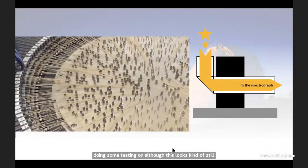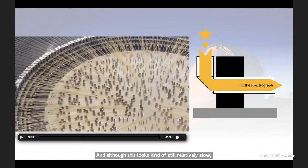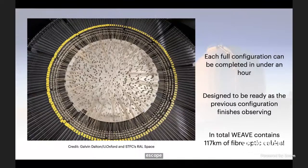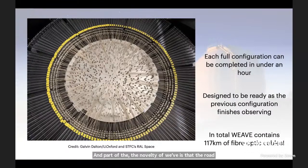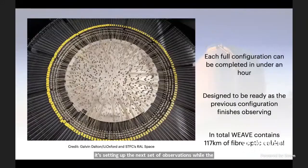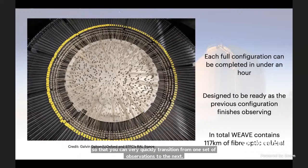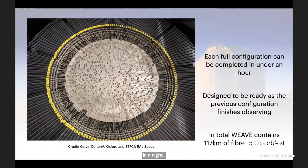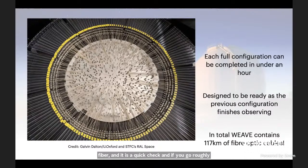The novelty of WEAVE is that the robots are configuring one set of observations in the background while another set is being observed by the telescope. You can see the robot at the top left setting up the next set of observations while the other one is ongoing. This is all designed to be completed within an hour, so you can very quickly transition from one set of observations to the next. This means WEAVE is going to be able to observe very efficiently thousands upon thousands of spectra in a night. When you add up all the fiber optic cables involved, it ends up being about 117 kilometers of fiber — roughly the distance from the Royal Observatory north to almost Balmoral.